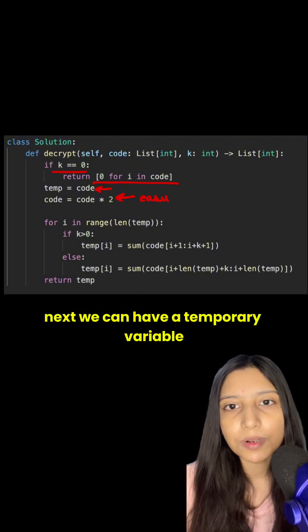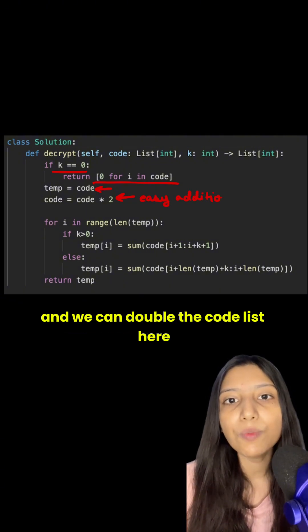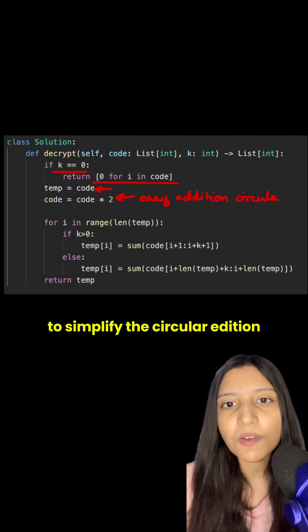Next we can have a temporary variable with the original code list and we can double the code list here to simplify the circular addition.